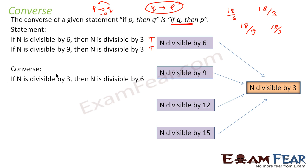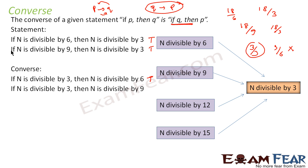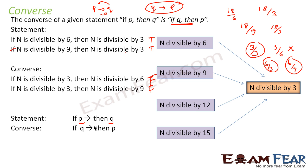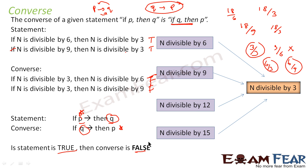Now, to find the converse, we just topple the statement. So the converse becomes: 'if the number is divisible by 3, then the number is divisible by 6.' Let's take the number 3: 3 is divisible by 3 (true), but 3 is not divisible by 6 — so this is a false statement. Similarly, the converse of the second statement is: 'if the number is divisible by 3, then the number is divisible by 9.' Taking number 6: 6 is divisible by 3 (true), but 6 is not divisible by 9 — so this is also false. Thus we can see the statement is true but the converse is false.